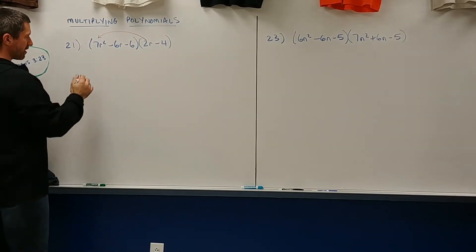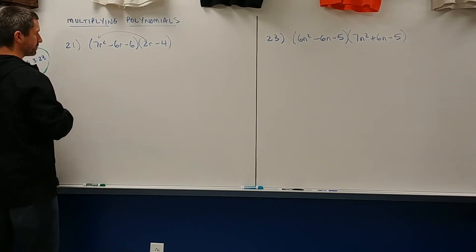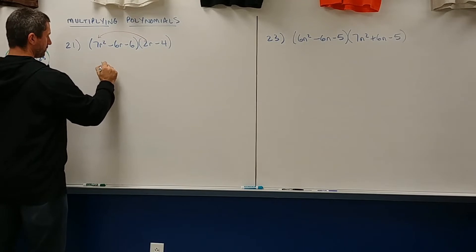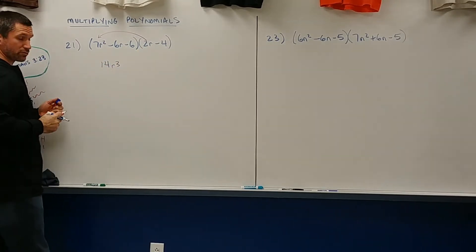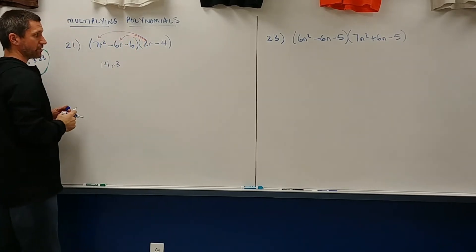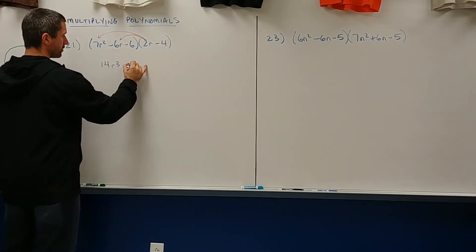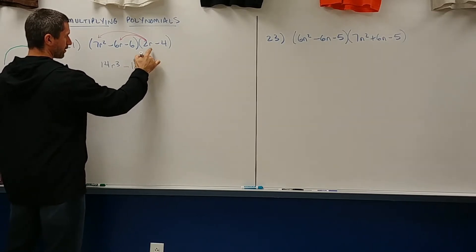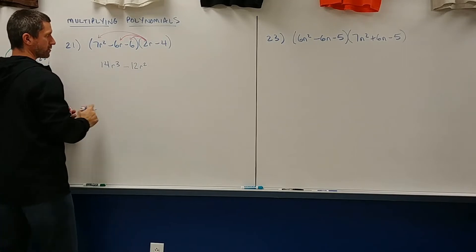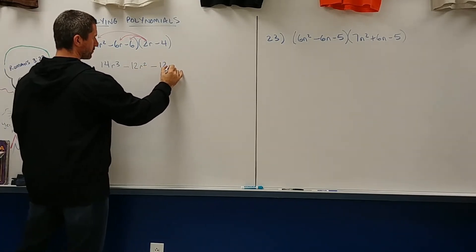2R times 7R squared. So let's multiply. 2 times 7 is 14, and then R times R squared is R cubed. Let's distribute again. 2R times negative 6R is negative 12R squared. And 2R times negative 6 is negative 12 with an R.